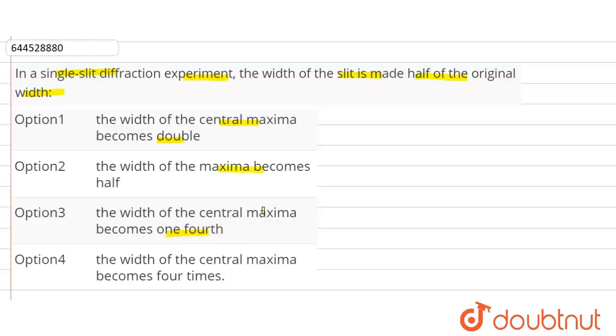See, the width of the central diffraction band - the width here is how much? The width of central diffraction band is equal to 2 times capital D times lambda by small d.